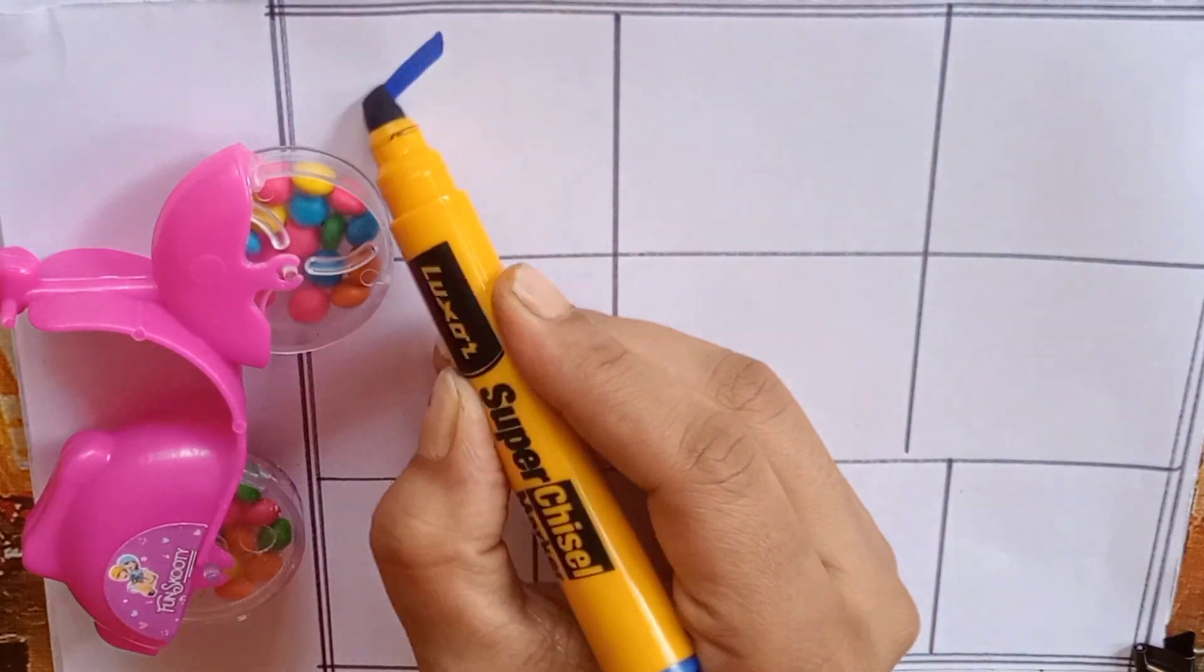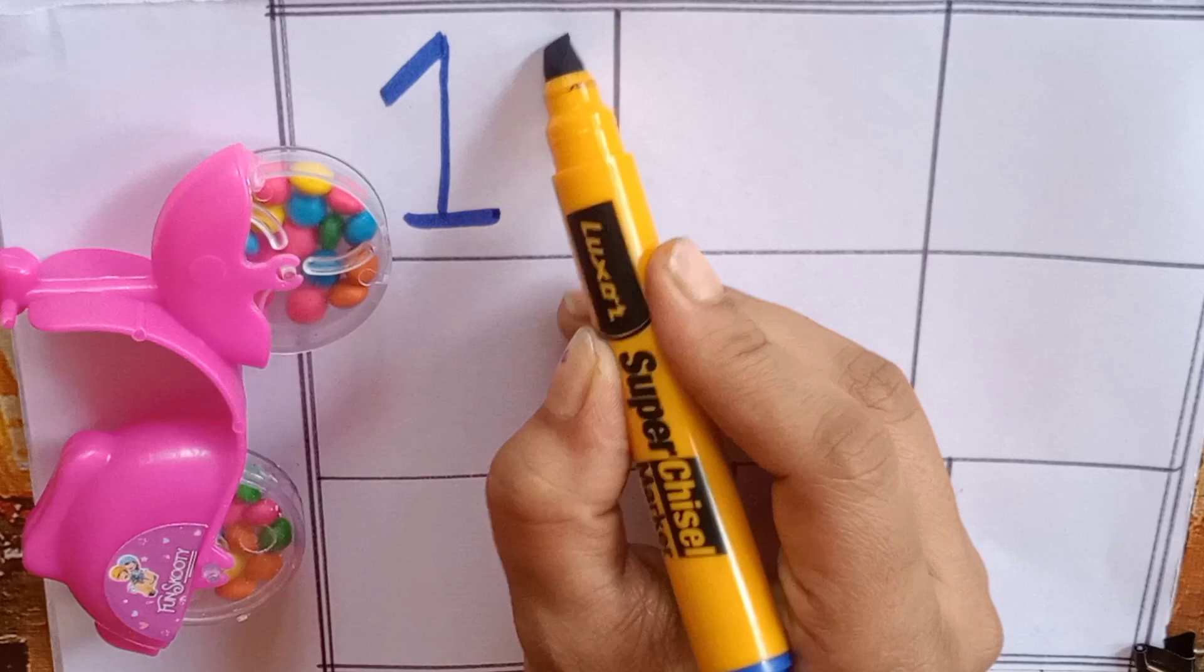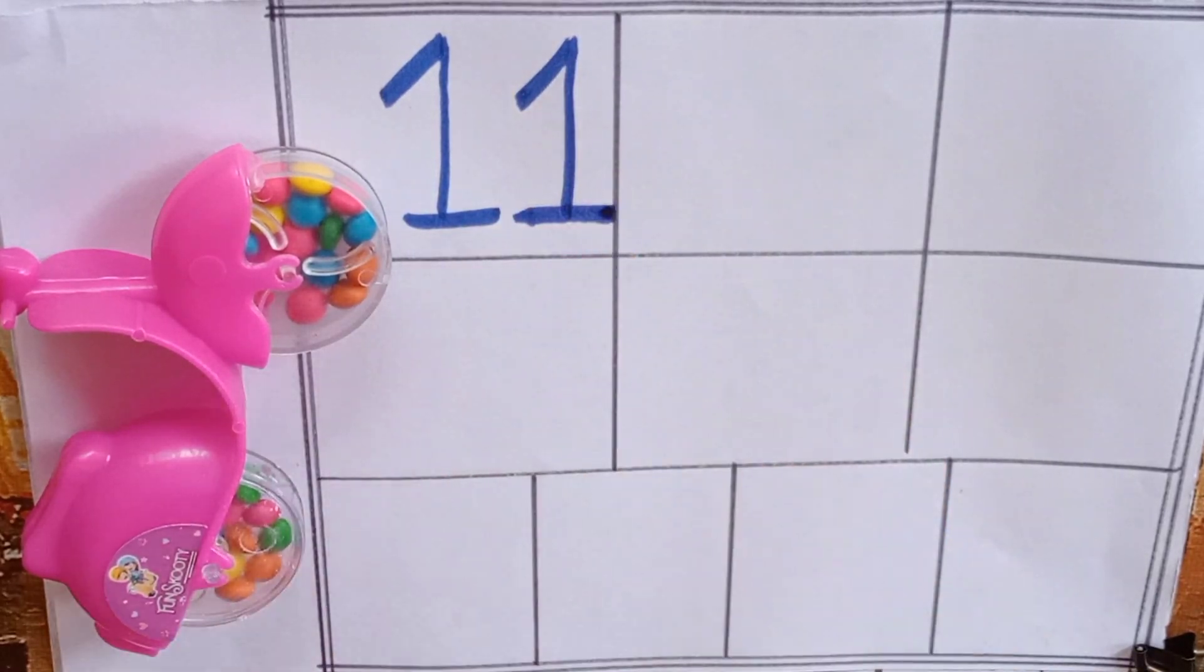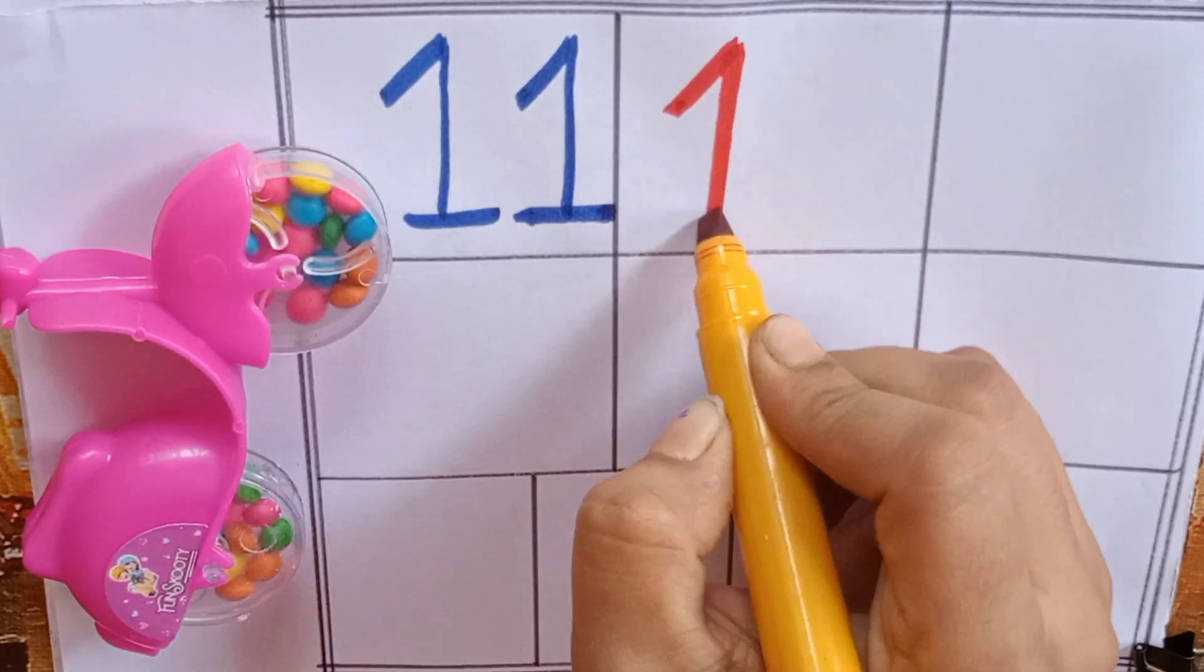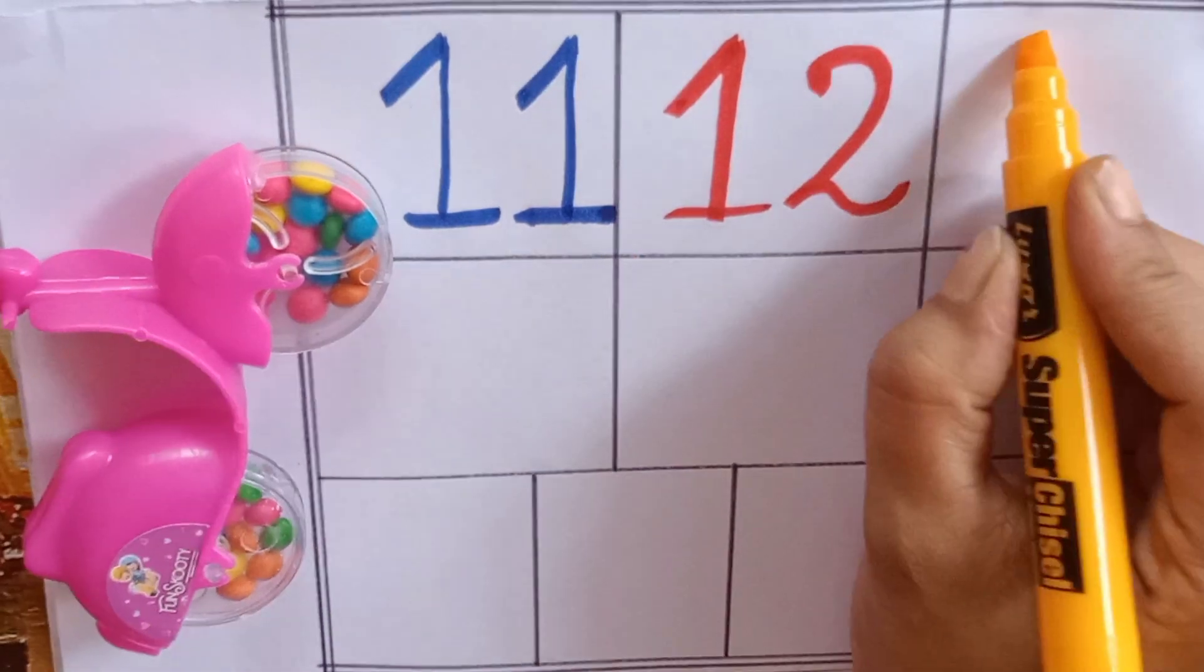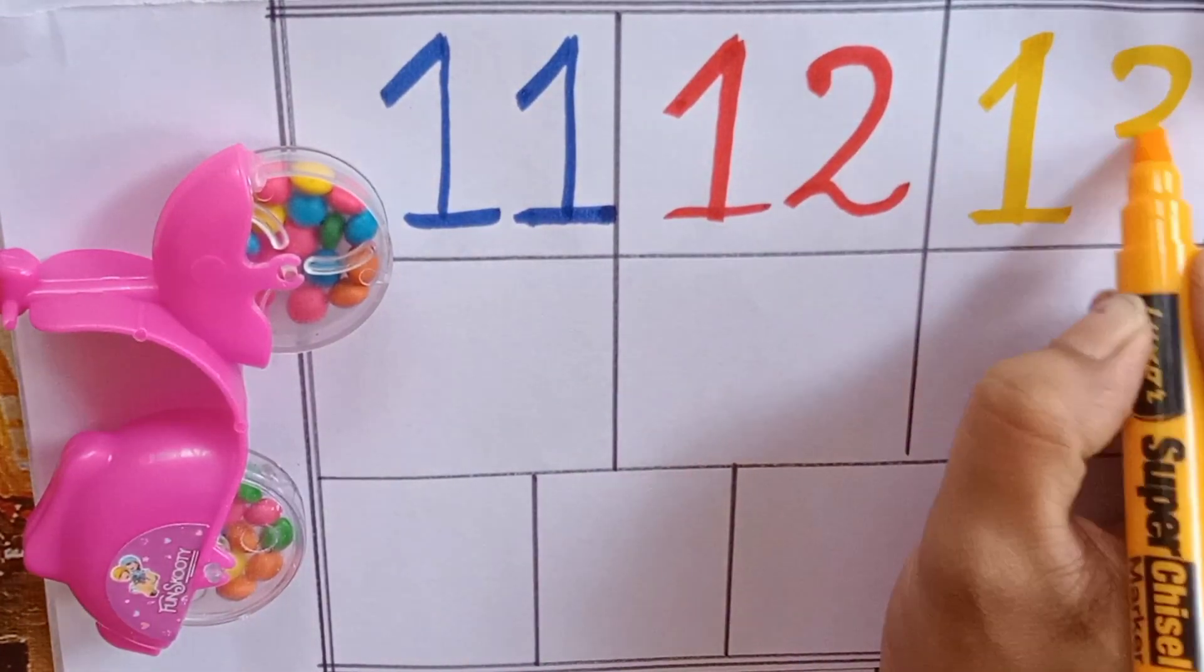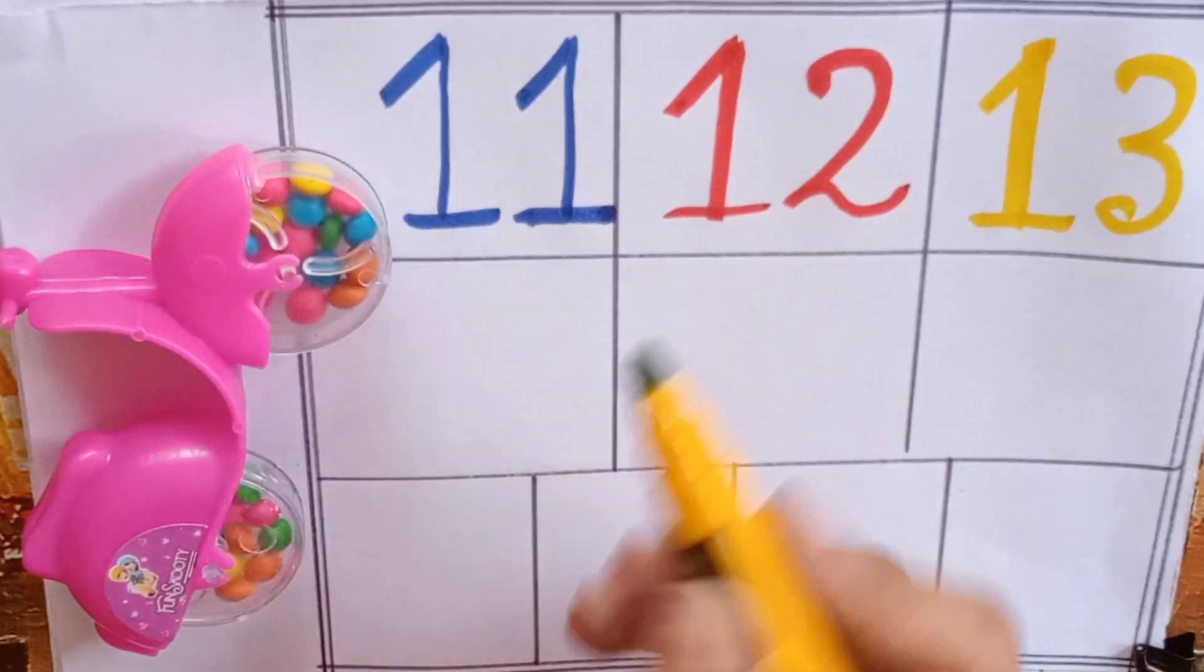Blue: one, one, eleven. Red: one, two, twelve. Yellow: one, three, thirteen. Green: one, four, fourteen.